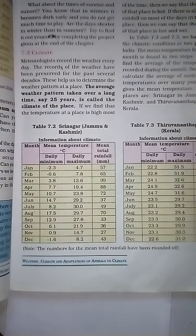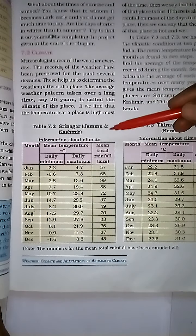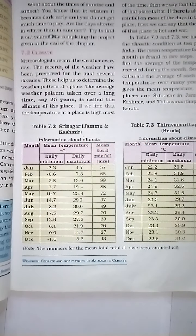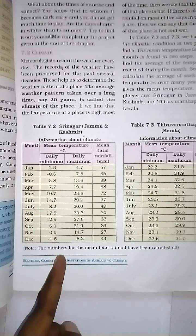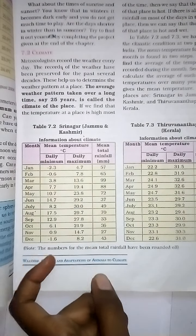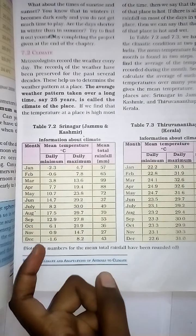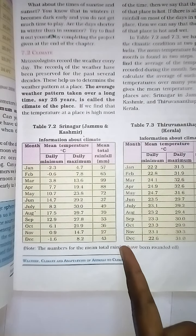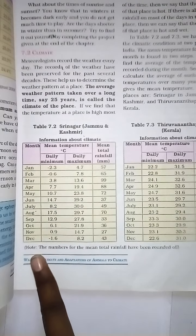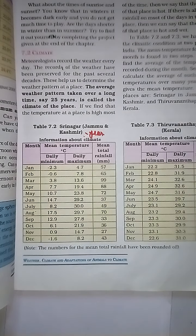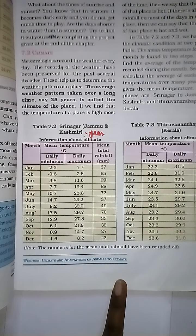This is a climatic report for Jammu and Kashmir. You can see the mean temperature with daily minimum and daily maximum values, and the total rainfall. For January in Jammu and Kashmir: the daily minimum is minus 2.3, the daily maximum is 4.7, and the overall rainfall is 57.